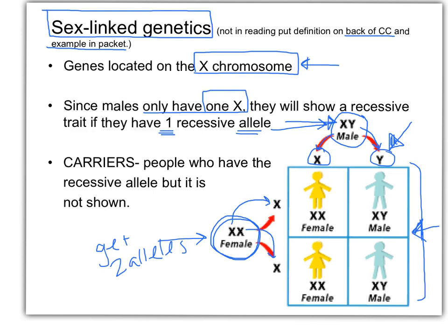Then we have something called a carrier — this is a vocab word you need to write down. Carriers are people who have the recessive allele but it's not shown. For sex-linked genetics, there's only one choice for carriers, and that would be females. Males would not be carriers because they would show the trait. So carriers are people who contain the recessive allele — it's recessive, we can't see it — that's why we would be a carrier.